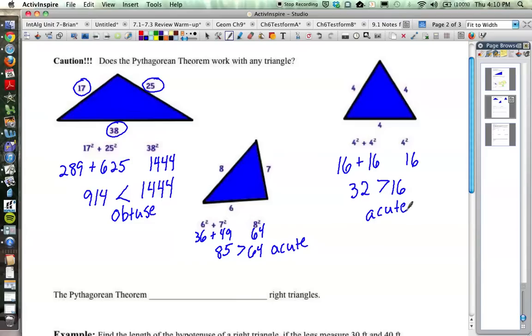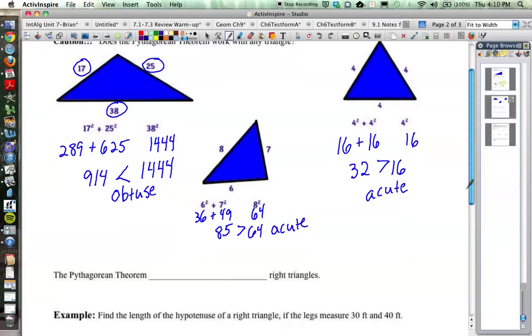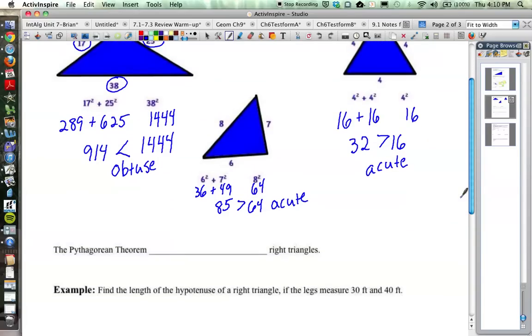So with right triangles, a squared plus b squared is equal to c squared. But you can also tell if it's acute or obtuse based on whether a squared plus b squared is greater than c squared or less than c squared. So to fill the blank below here, we have the Pythagorean Theorem. I'm going to say only applies to right triangles.